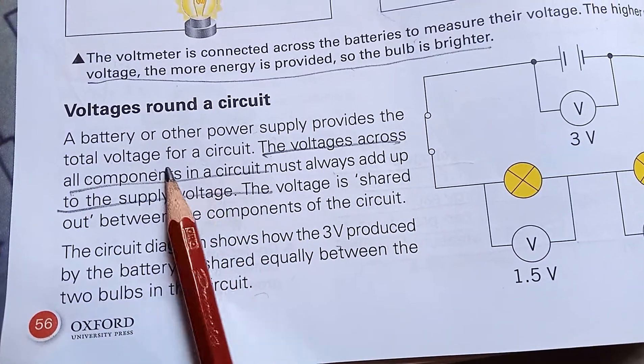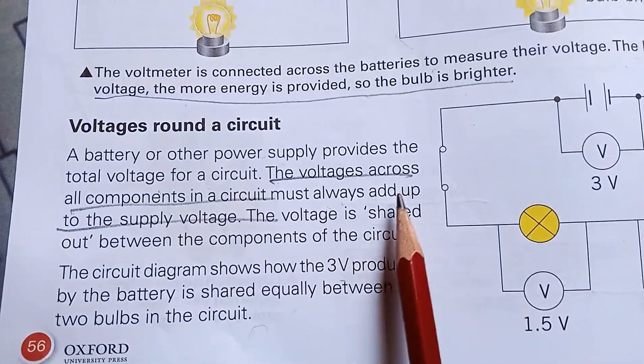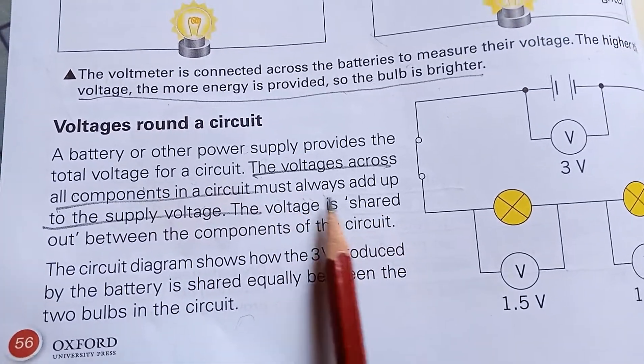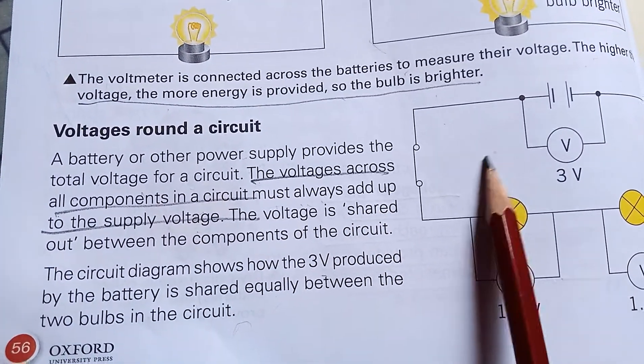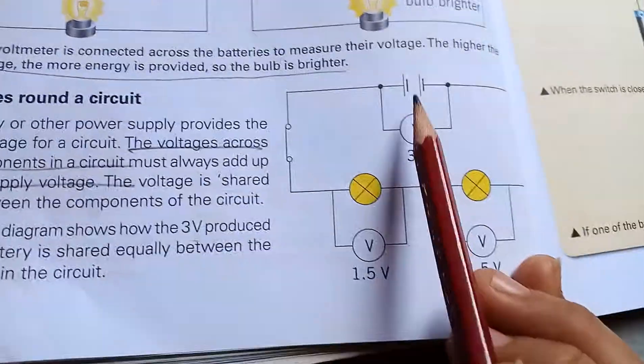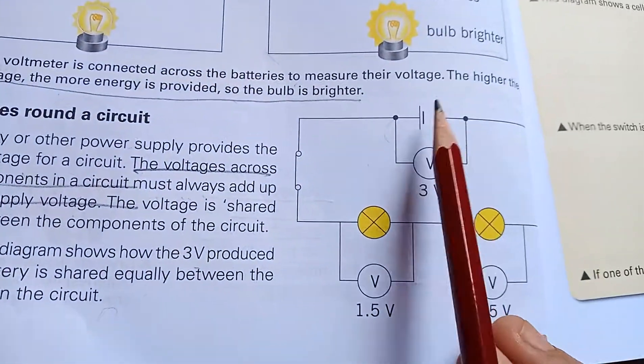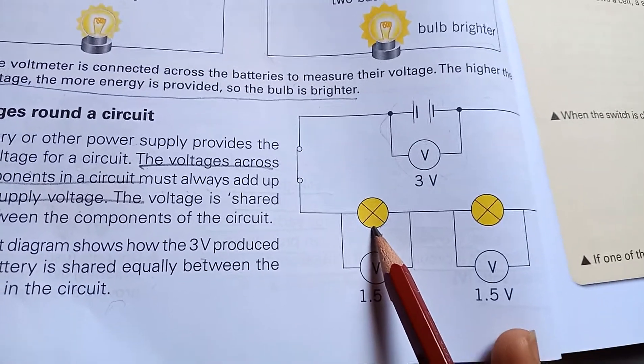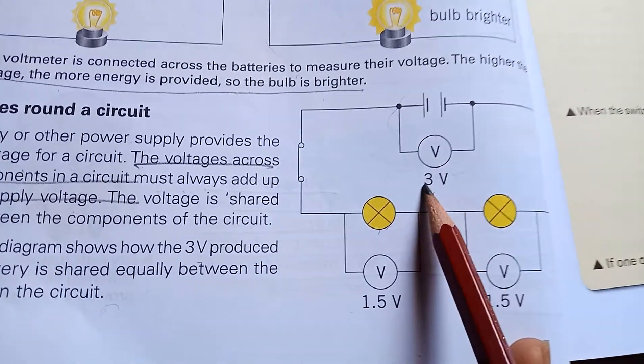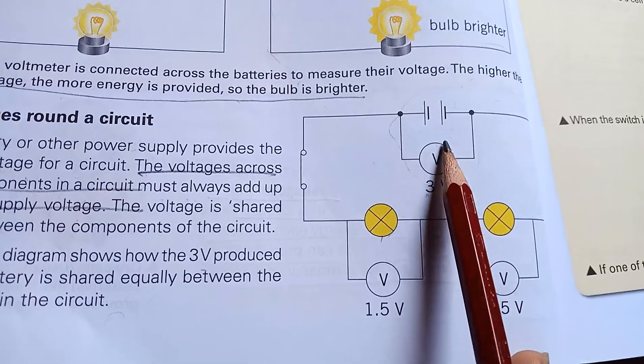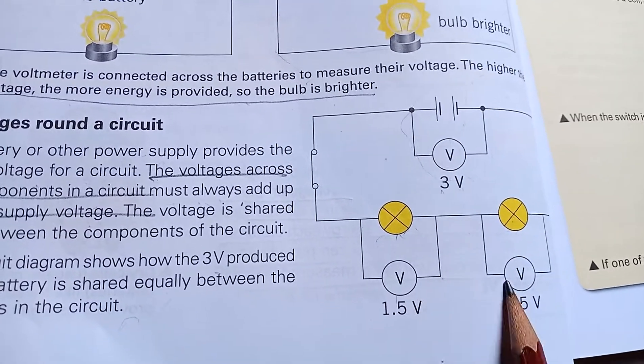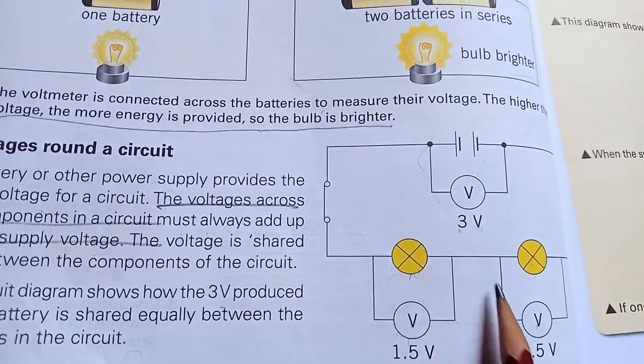Voltage around a circuit: A battery or other power supply provides the total voltage for a circuit. The voltages across all the components in a circuit must always add up to the supply voltage. The voltage is shared. If you are connecting one bulb in a circuit with a 3 volt battery, then connect two bulbs, the voltage will be divided into two parts and the bulbs will get dimmer.